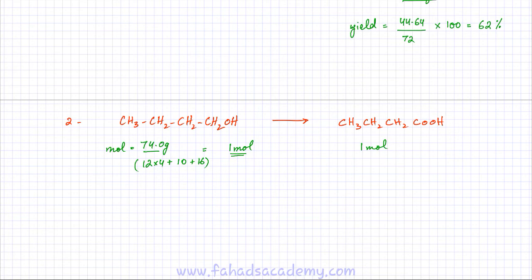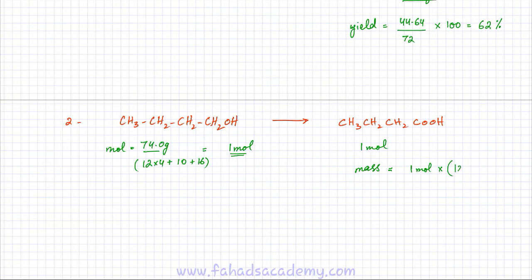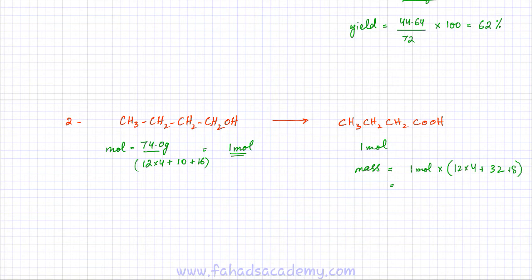If 1 mole of butanoic acid is theoretically being produced, the theoretical mass = moles × molar mass of butanoic acid = 1 × (12×4 + 2 oxygens×16 + 8 hydrogens) = 48 + 32 + 8 = 88 grams. So the theoretical output on paper is 88 grams.